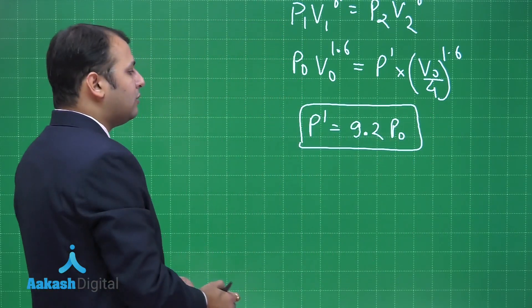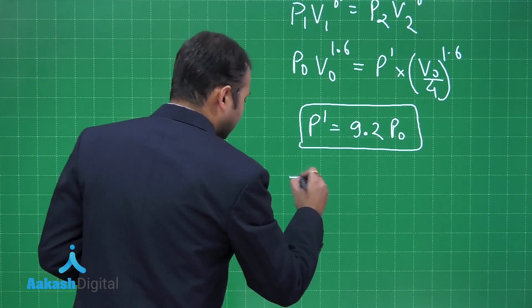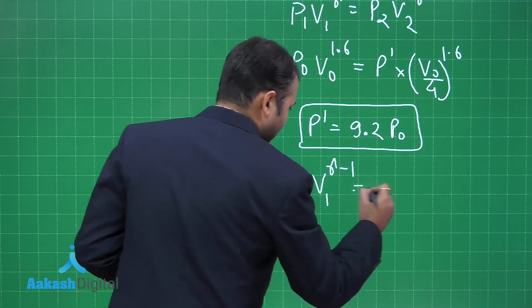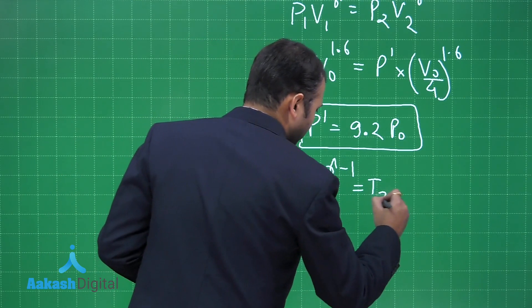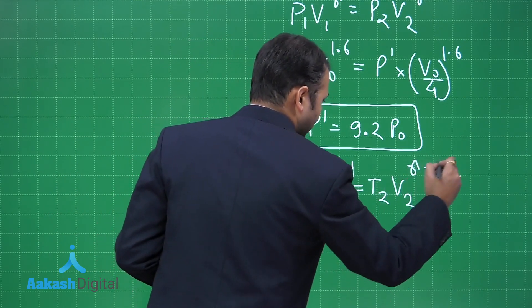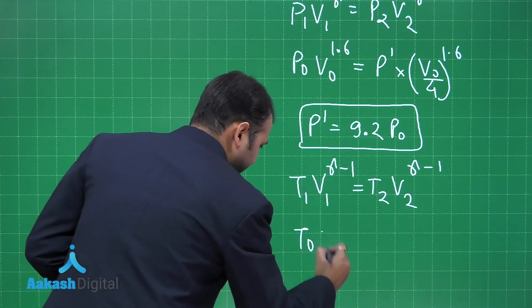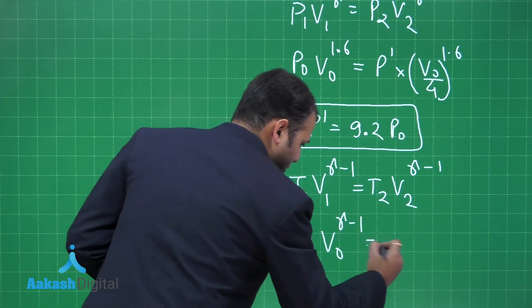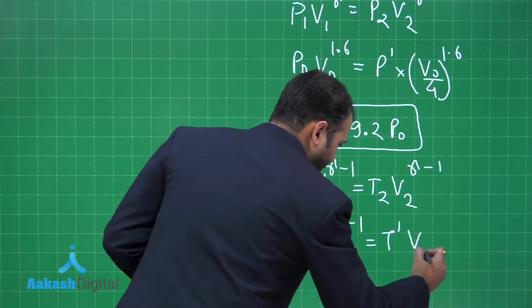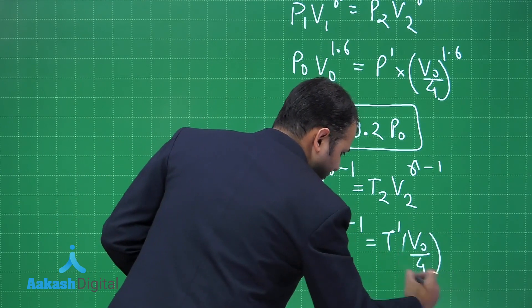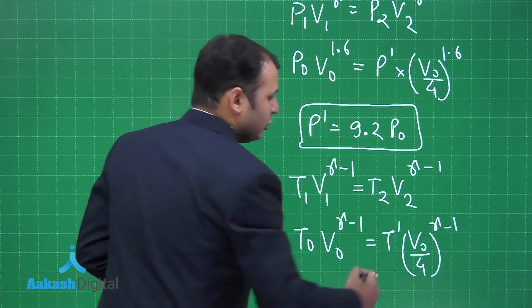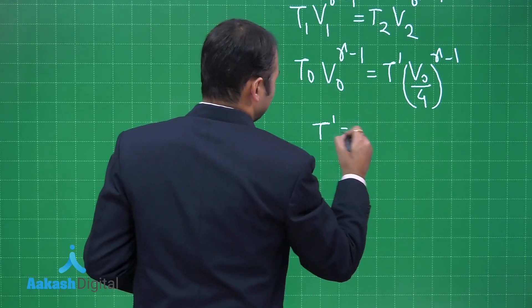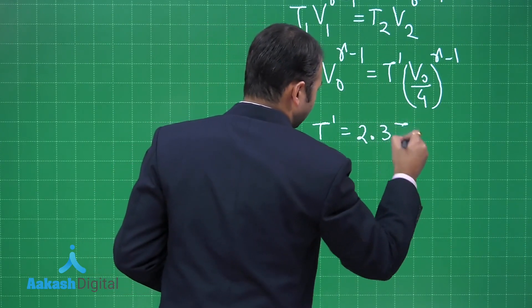For the temperature, using T₁V₁^(γ−1) = T₂V₂^(γ−1): T₀·V₀^0.6 = T′·(V₀/4)^0.6. Solving this gives T′ = 2.3·T₀.